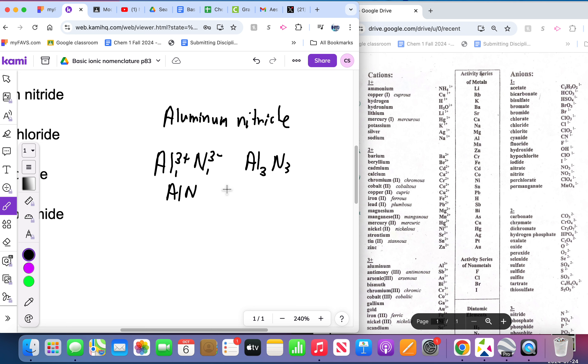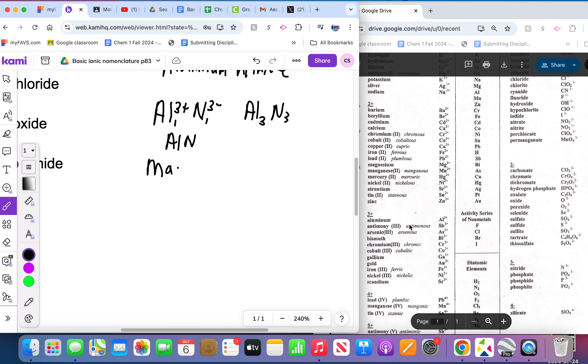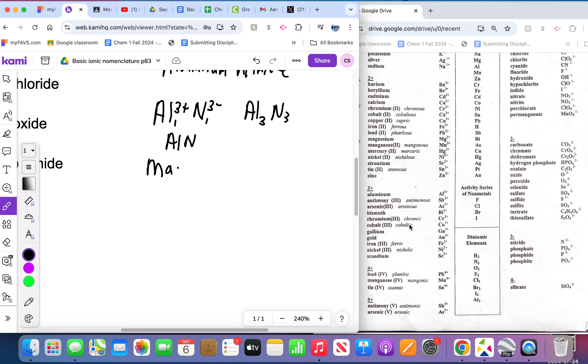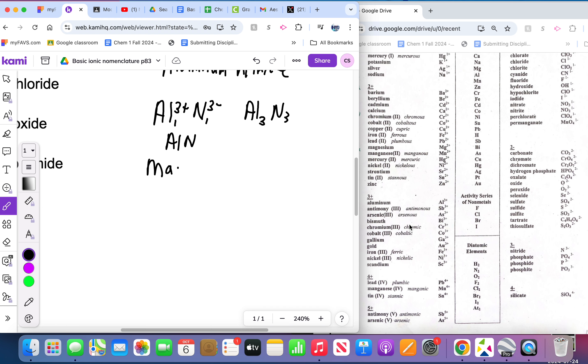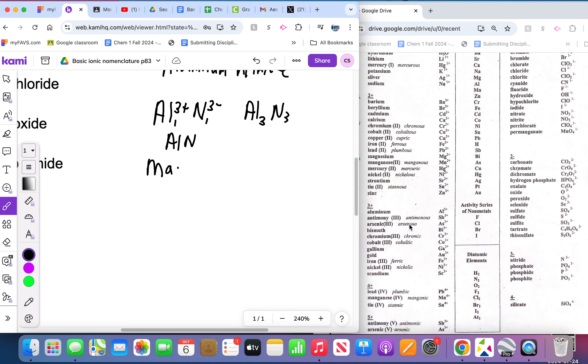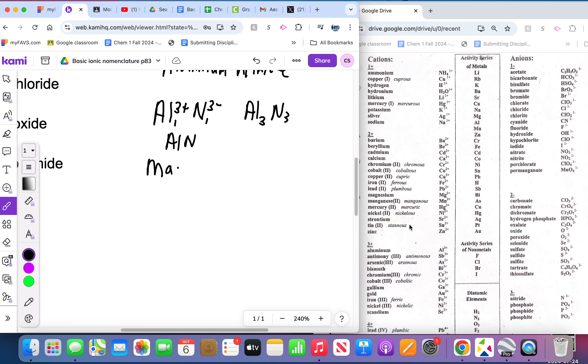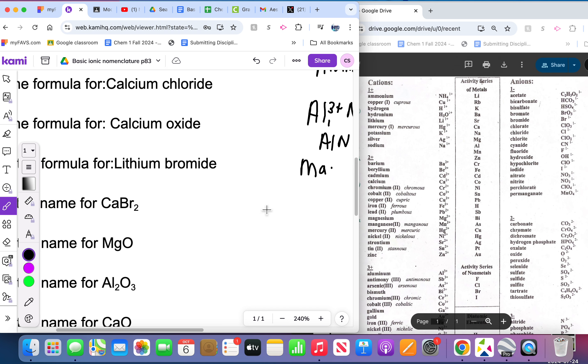You wouldn't want to crisscross and get like Al₃N₃ because you want this to be in the simplest ratio. Sometimes people will do one like this. I'm trying to think of one that would work to show you how that would work, but there's not a good example on here for me to do. We'll deal with that a little bit later.